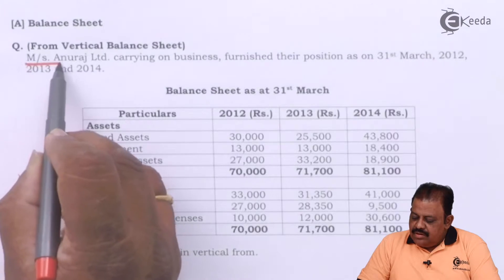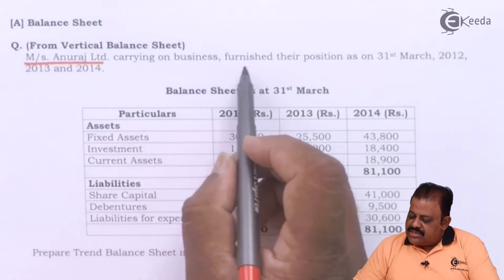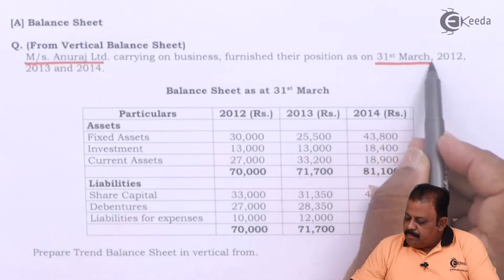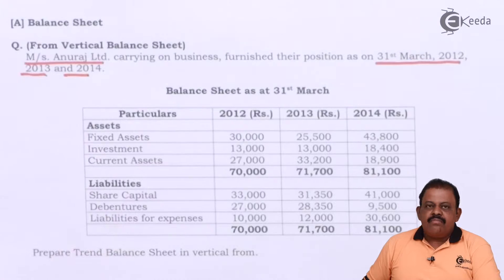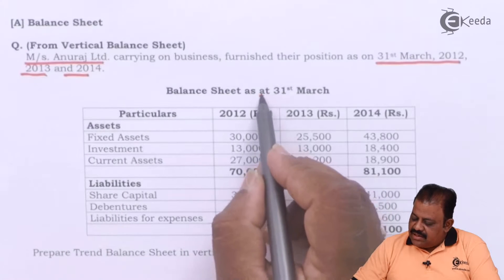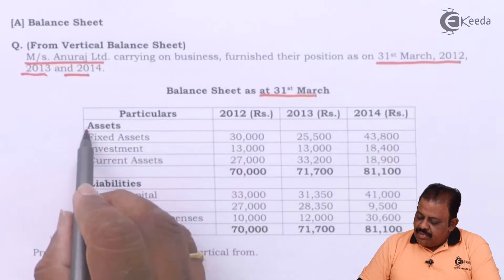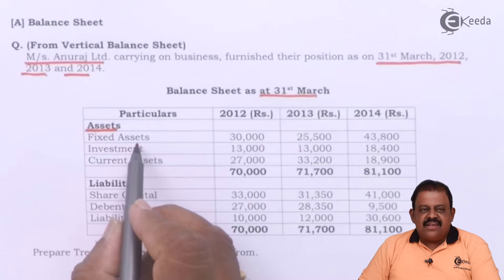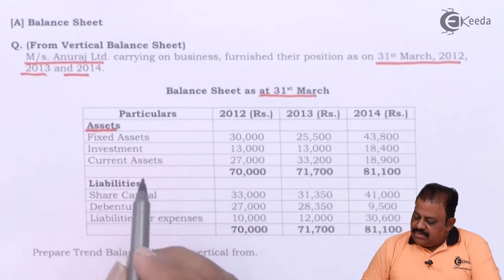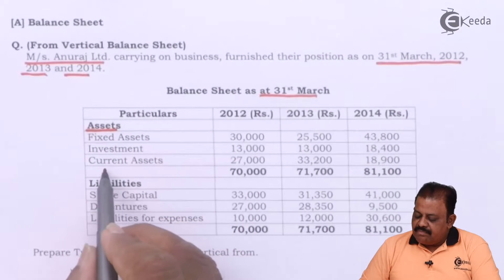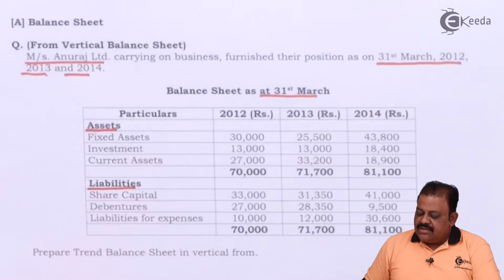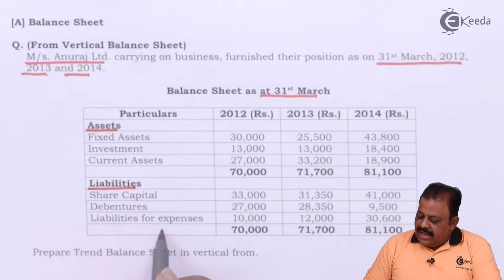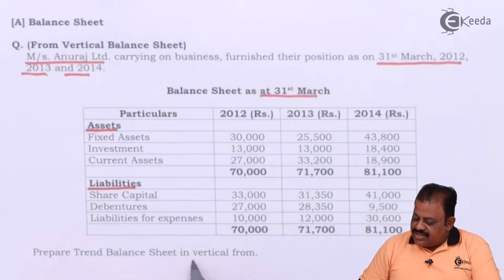Let us read the question. Anuraj Limited, carrying on business, furnish their position as on 31st March 2012, 2013, and 2014. The balance sheet includes assets such as fixed assets, investments, current assets, and liabilities such as share capital, debentures, and liabilities for expenses.